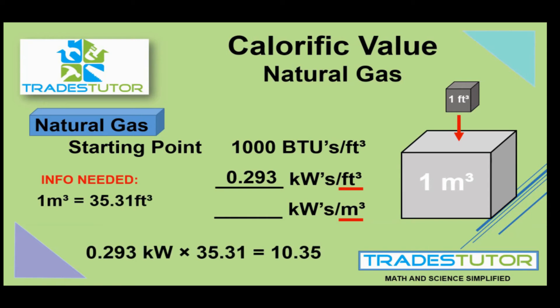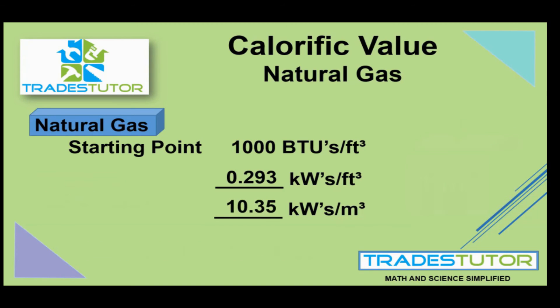If we get 0.293 kilowatts in one cubic foot, and we were to fill up a whole cubic meter with gas, we would get 35.31 times more — or in the end, 10.35 kilowatts per cubic meter. You can see how changing from cubic feet to cubic meters really increases your volume.